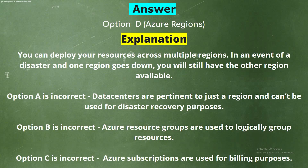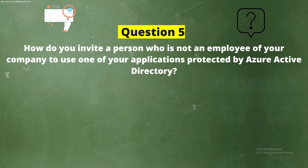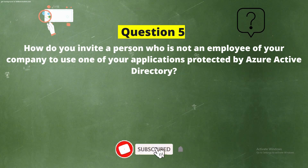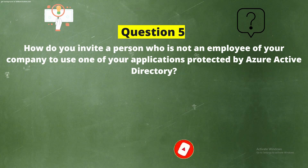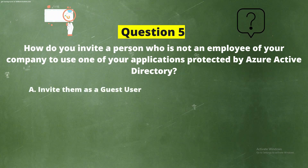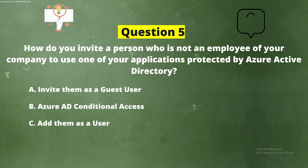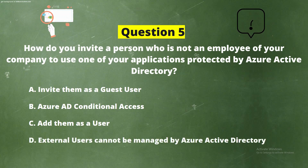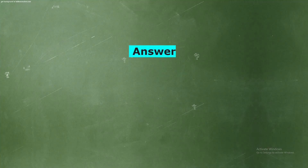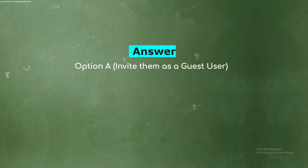Question 5: How do you invite a person who is not an employee of your company to use one of your applications protected by Azure Active Directory? The options are: Option A - Invite them as a guest user, Option B - Azure AD Conditional Access, Option C - Add them as a user, Option D - External users cannot be managed by Azure Active Directory.